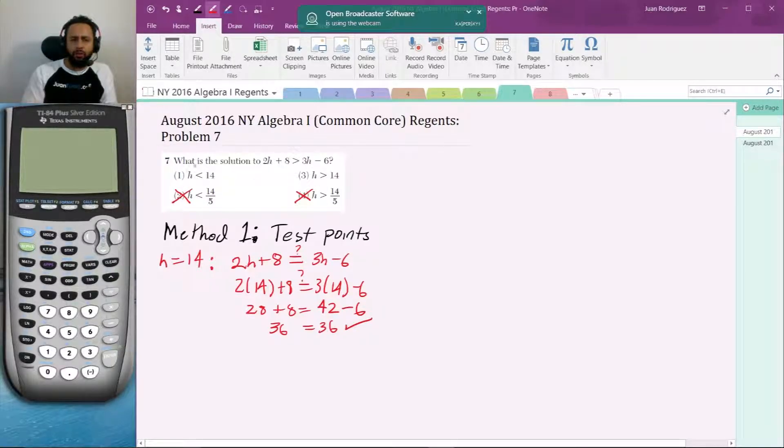So how do I eliminate the choice between 1 and 3? I'm going to take a test point now that's in this interval. How about H equals 0? H equals 0 is less than 14, so that would prove if 0 satisfies the inequality then 0 is a part of the solution set.